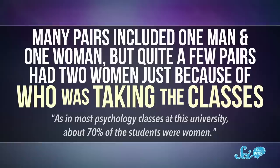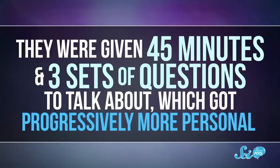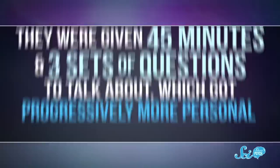The original paper consisted of three fairly similar experiments, where undergrads in a psychology class were paired with a classmate they didn't know well. Many pairs included one man and one woman, but quite a few pairs had two women, just because of who was taking the classes. They were given 45 minutes and three sets of questions to talk about, which got progressively more personal.